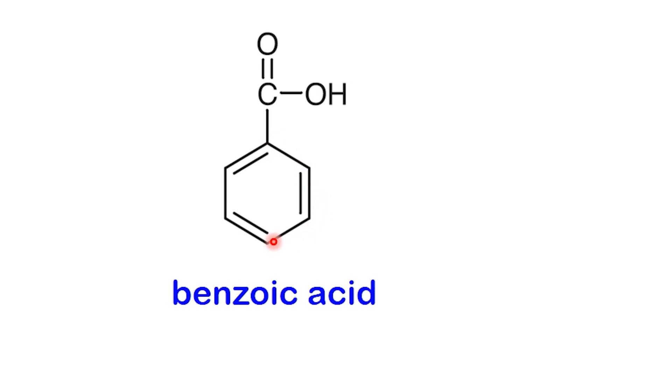If the ring has substituents, we number around it to give them the lowest possible positions, and then list them in alphabetical order, just as we've done before. But in this simple case, there are no other substituents. So the correct name here is simply benzoic acid.